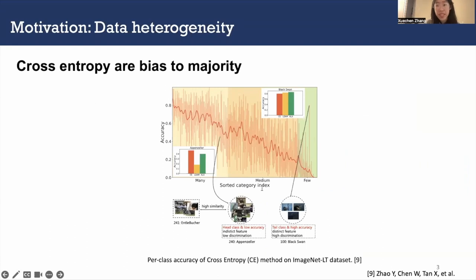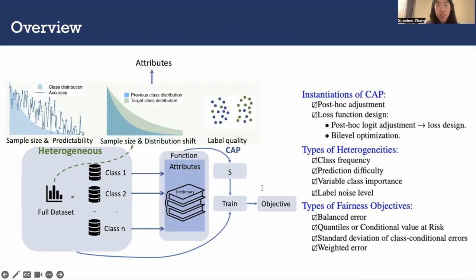Without care, this heterogeneity impedes the learning process, most notably when optimizing fairness objectives. We propose a general method to personalize the optimization strategy of individual classes so that optimization better adapts to heterogeneity.